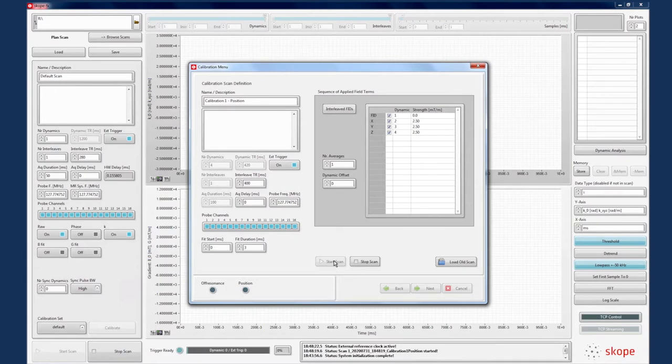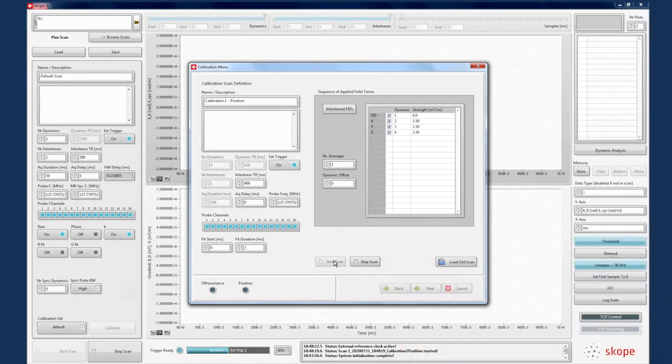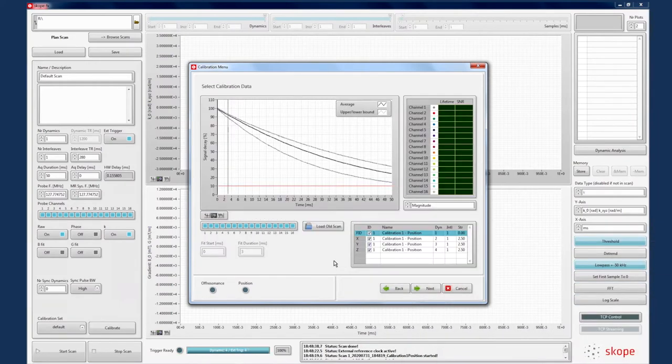Once the LED light appears, we can scan the calibration sequence on the MR scanner. Notice the progress bar incrementing with each TR. After four acquisitions, we see the scope system post-processing the data and showing an analysis of data quality. We can see the average and boundary FIDs on the left with indications for probe SNR and lifetime on the right.